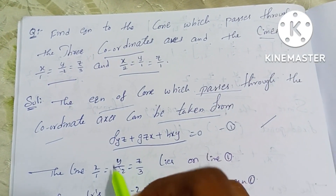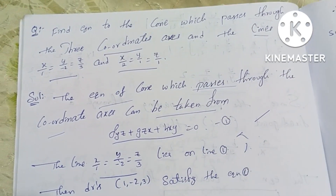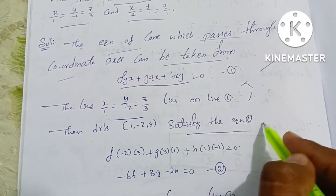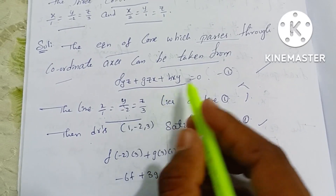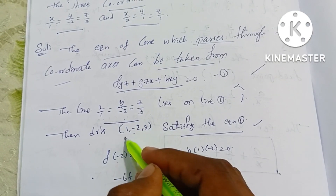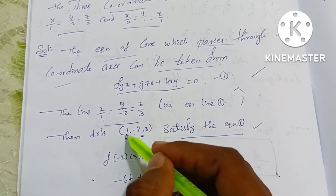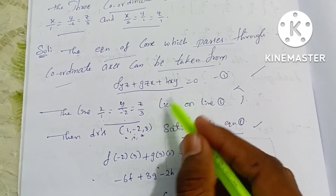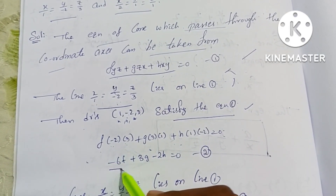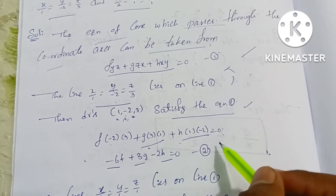For the first line, the direction ratios are 1, minus 2, minus 3. These satisfy Equation 1. Substituting into the general cone equation: f·y·z with (1)(−2)(−3) gives −6f, plus g·z·x gives 3g, plus h·x·y gives −2h, equal to 0. This is Equation 2.